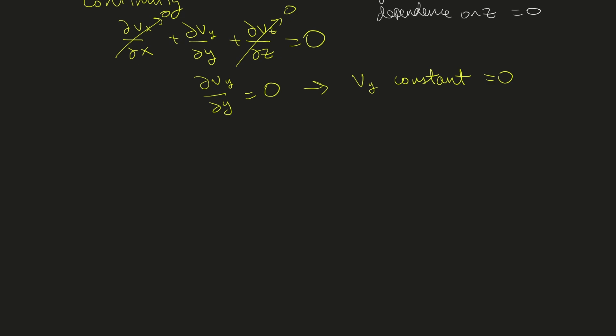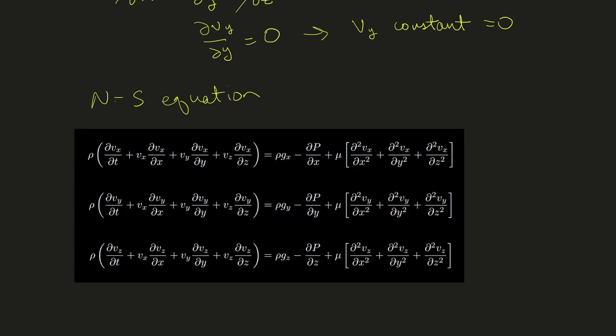Now we move to the Navier-Stokes equation. This is the Cartesian coordinate version. We can go through term by term and cancel terms that don't matter. From our fully developed assumption and zero flow in y and z directions, the entire left-hand side of the first equation equals zero.